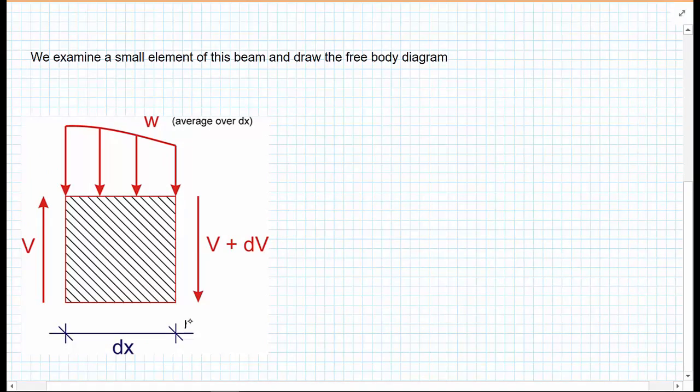And we're going to examine the equilibrium of this portion of the beam. You can see we've omitted any moments that would be on this portion and we're just considering any forces in the Y direction. And we're going to equate equilibrium. So sum of the forces in the Y direction must be equal to zero for equilibrium.